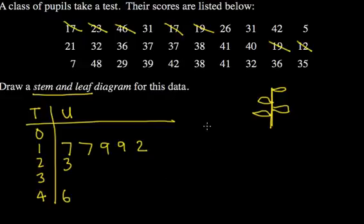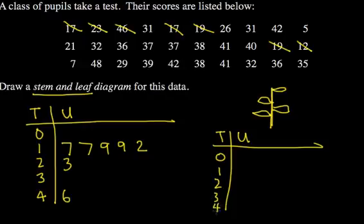So then if I wanted to draw this again, second version of it, then I could easily then write these in order. So then my second graph, my neater graph, would have the same tens, 0, 1, 2, 3, and 4. But then in my 10s, it would be 2, 7, 7, 9, 9, which is much easier to order. So I would do a working one and then a neat one to get into the habit of doing this stem and leaf diagram.